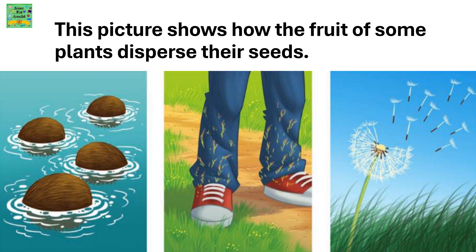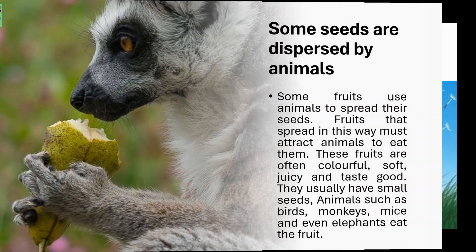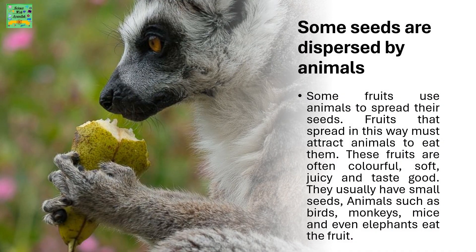This picture shows how the fruit of some plants disperse their seeds. Some seeds are dispersed by animals. Some fruits use animals to spread their seeds. Fruits that spread in this way must attract animals to eat them. These fruits are often colorful, soft, juicy, and taste good. They usually have small seeds.